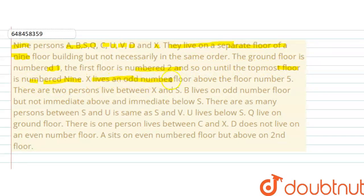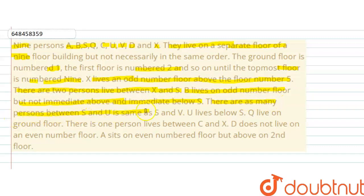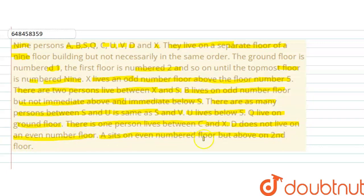X lives on an odd number floor above floor number 5. There are two persons living between X and S. B lives on odd number floors but not immediately above or immediately below S. There are as many persons between S and U as between S and V. U lives below S. Q lives on the ground floor. There is one person living between C and X. D does not live on an even number floor. A sits on an even number floor but above the second floor.